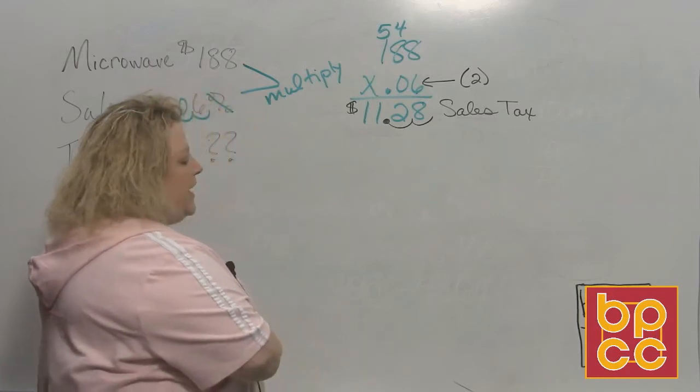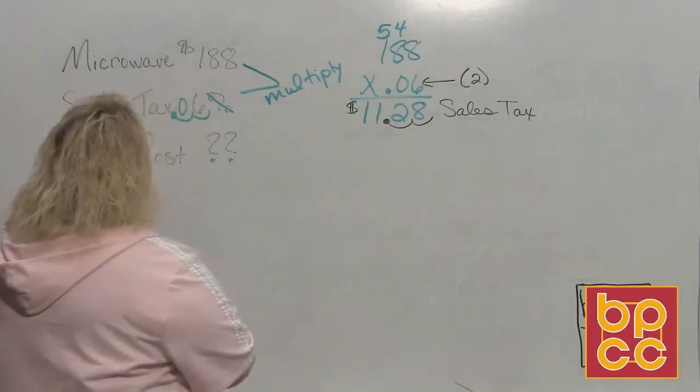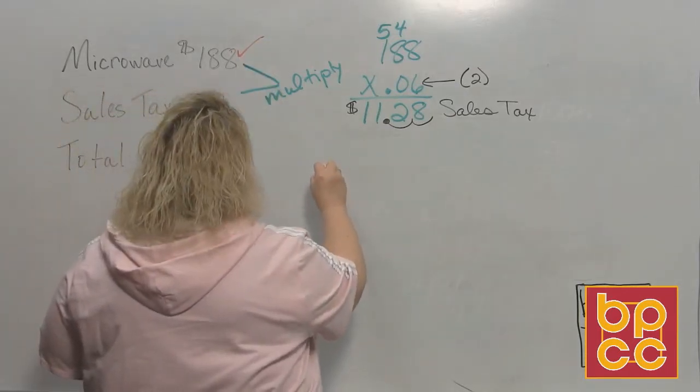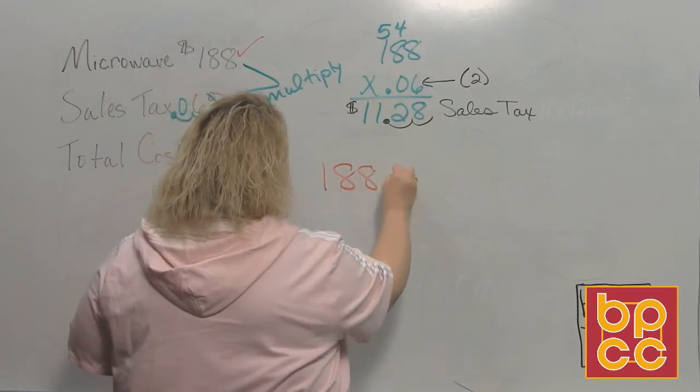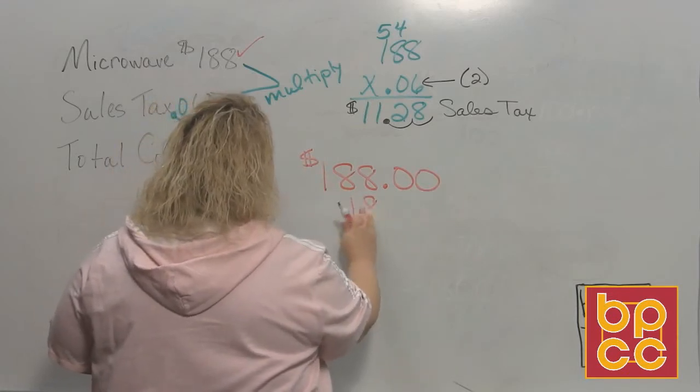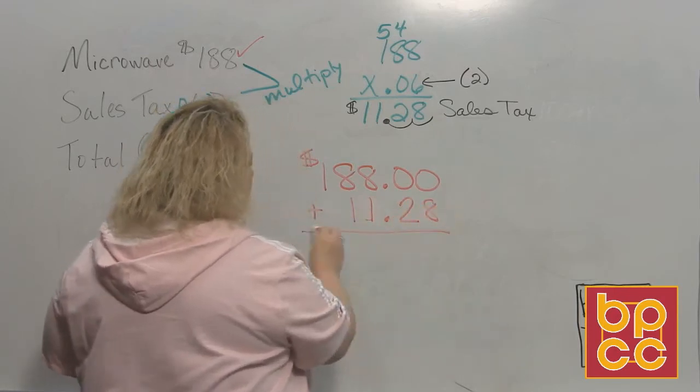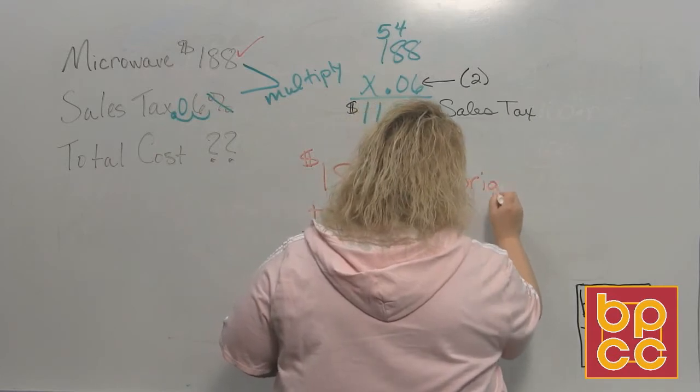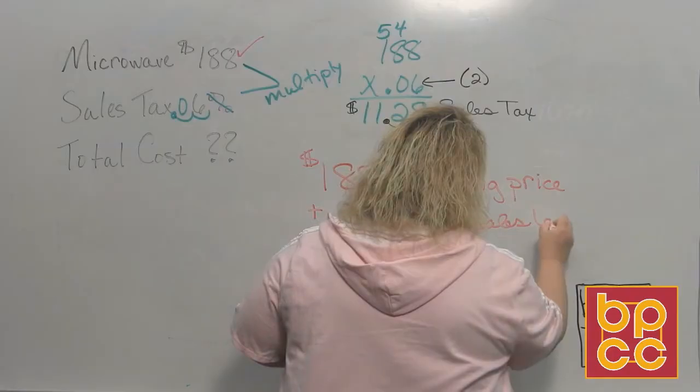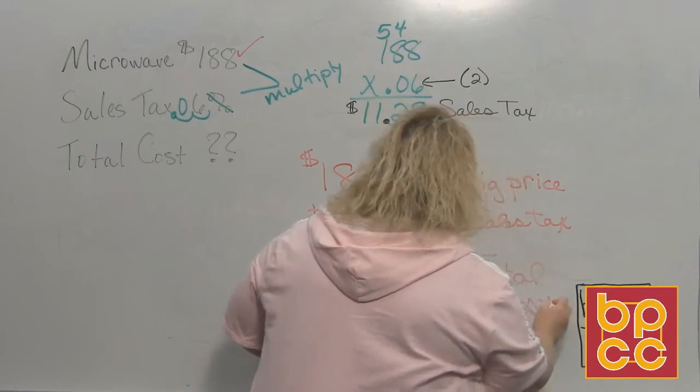So my sales tax on $188 would be $11.28. Now, does that answer my question? No, it doesn't because I want to know the total cost. And you know that the total cost is your original price, which is $188, plus your sales tax. So you want to take the original price, $188, and remember that's decimal point zero zero because this is money. And we're going to add $11.28 because that's the sales tax. So you have your original price plus the sales tax.